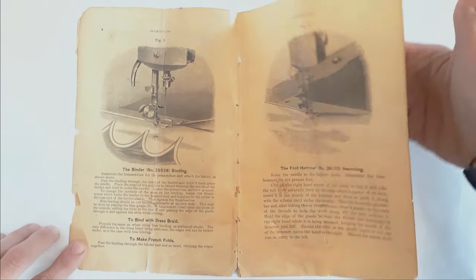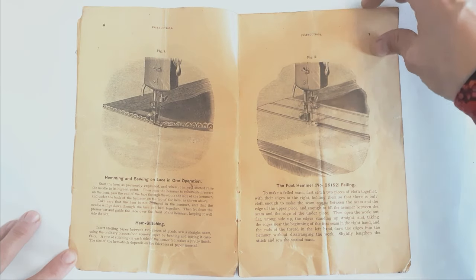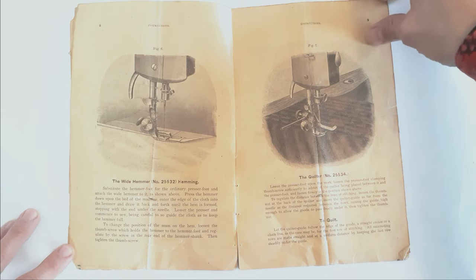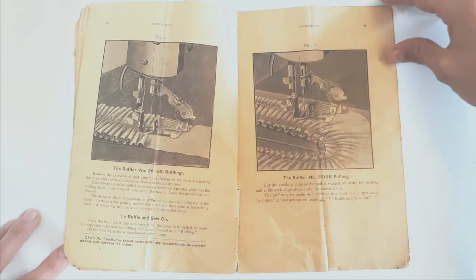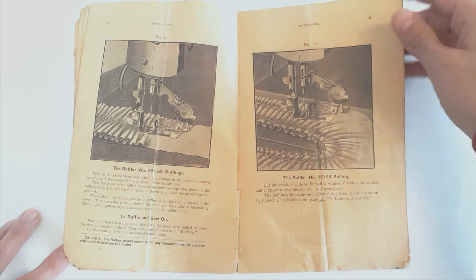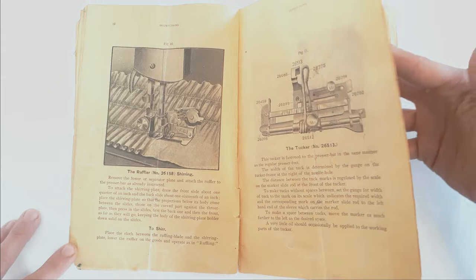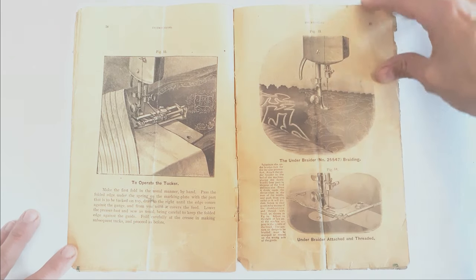Over the years, Singer changed both the attachments that were offered with their machines, along with the actual design of some of them. So where applicable, I will show you some of the differences in designs from the late 1800s to the mid 1900s, and also show you how some of the attachments might appear if they have come apart. Hopefully, this video will allow you to not only identify, but also put to use any of the machine attachments that you might currently have or may encounter in the future.